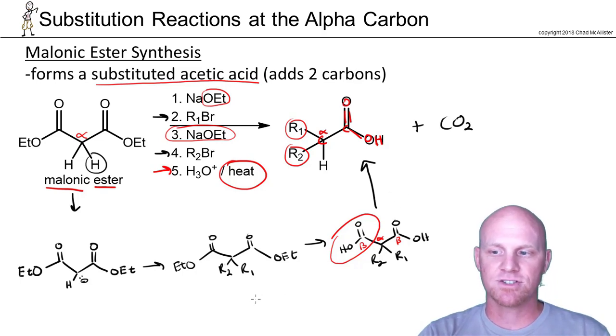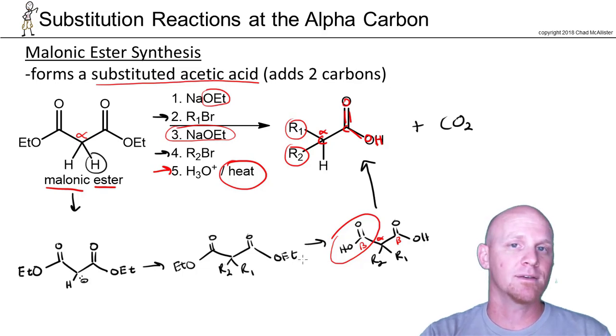It kind of looks like magic how you get to the end here, but the first thing that happens is you just do hydrolysis of both esters, and then beta decarboxylation takes place, leaving you with just this carboxylic acid where you've added two different substituents to it.